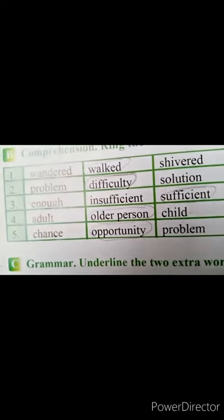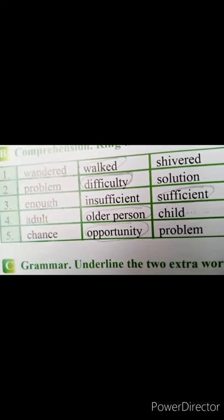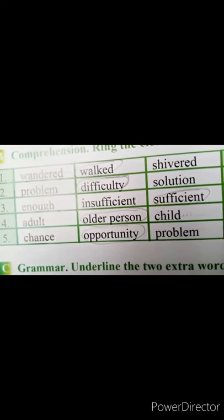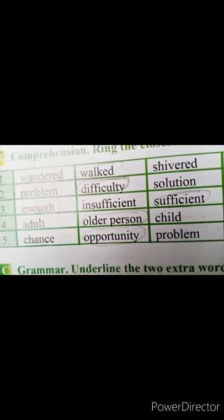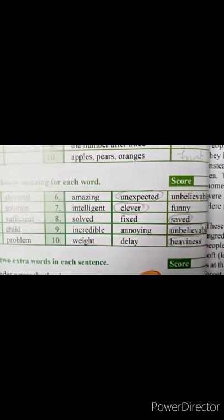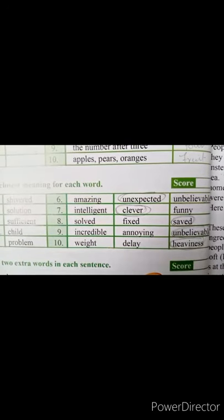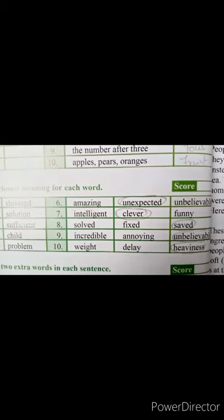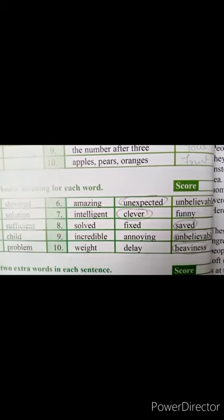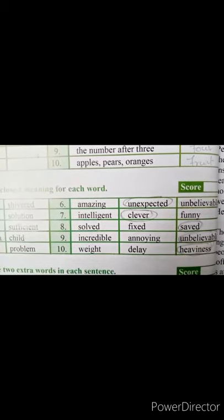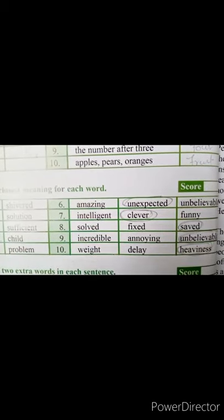Fifth one is 'chance'. Chance means موقع — جسے آپ فائدہ اٹھاتے ہو. Options: opportunity and problem. Problem کہتے ہیں مسئلے کو، opportunity موقع کو — تو chance اور opportunity کا ایک ہی مطلب ہے. ہم opportunity کو circle کریں گے. Sixth one is 'amazing'. Amazing means وہ چیز جس کی آپ توقع نہیں رکھتے اور وہ ہو جاتی ہے اور آپ کو حیران کرتی ہے. Options: unexpected and unbelievable. Unexpected آئے گا — جس کی آپ توقع نہیں رکھتے.